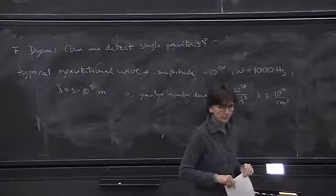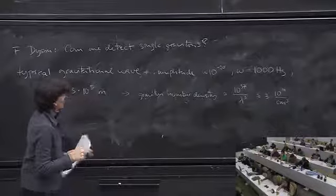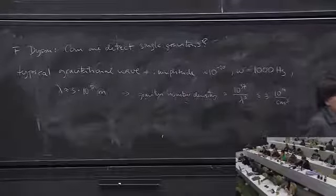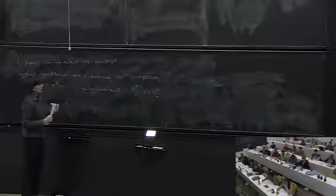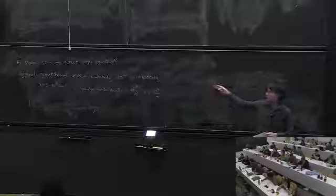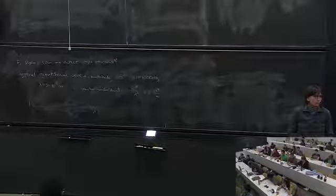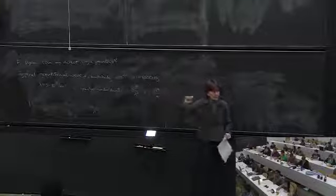The number you get is a graviton number density in an appropriate reference volume, which is the wavelength cubed. What you find here is 10 to the 37 divided by lambda cubed. If you want to see what this is in more intuitive units, it's still 3 times 10 to the 14 per cubic centimeter. You see these are gigantic numbers. The amplitude is dimensionless, compared to the metric entries, it's the f_mu_nu. The frequency depends on the source. Gravitational waves occur over a very wide range of frequencies.